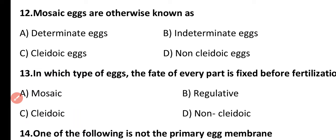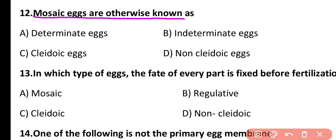Question 12. Mosaic eggs are otherwise known as determinate eggs, indeterminate eggs, cliodic eggs, or non-cliodic eggs? The correct answer is option A. Mosaic eggs are also known as determinate eggs, in which the fate of every part of the egg is fixed.